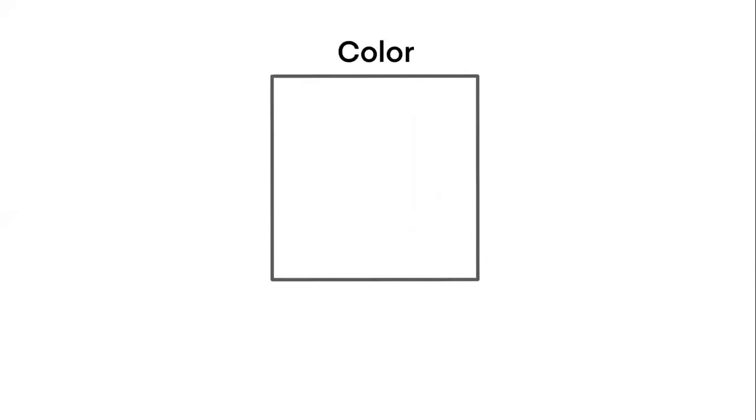Next up we have color. Color refers to wavelengths of light. It is the hue, the value, the intensity, the temperature. It also relates to the tint, tone, and shade.